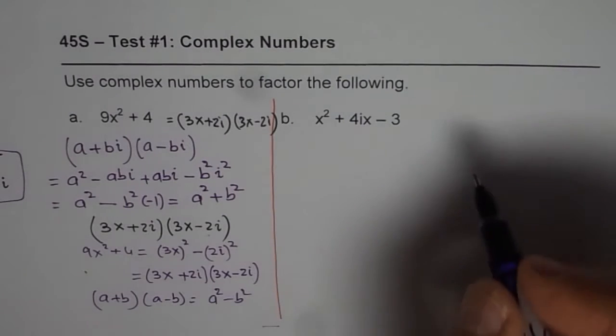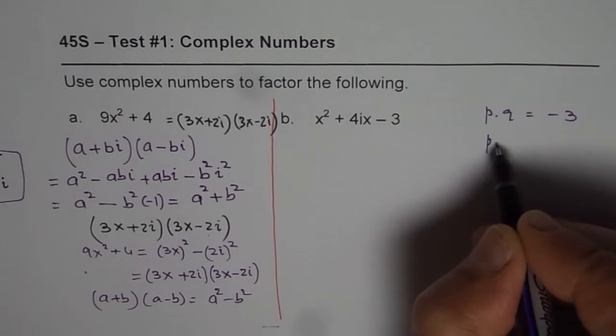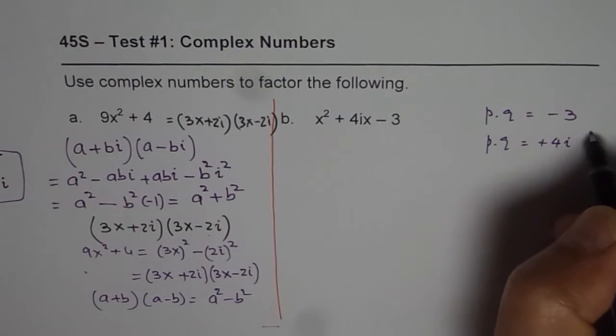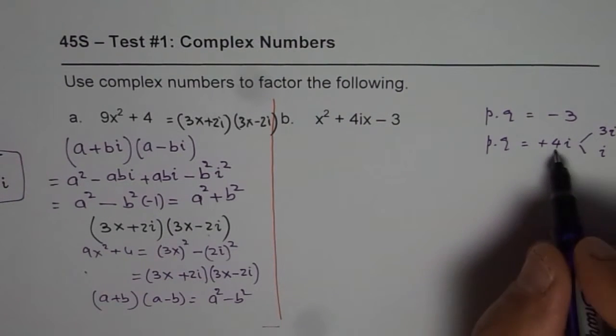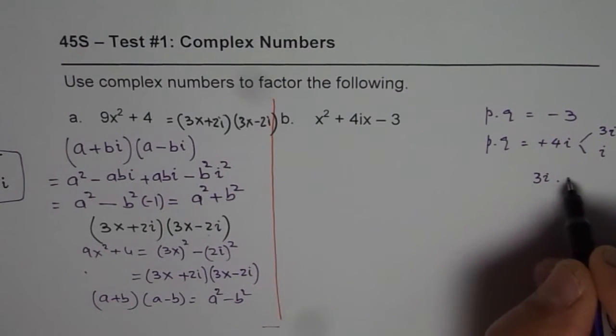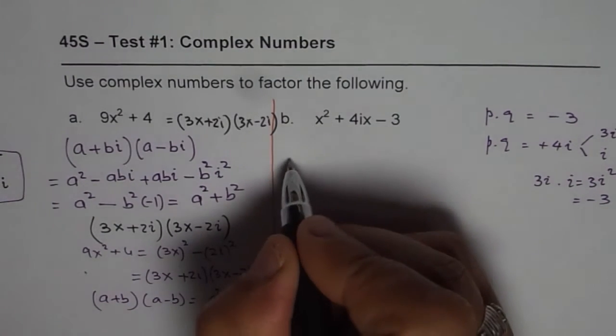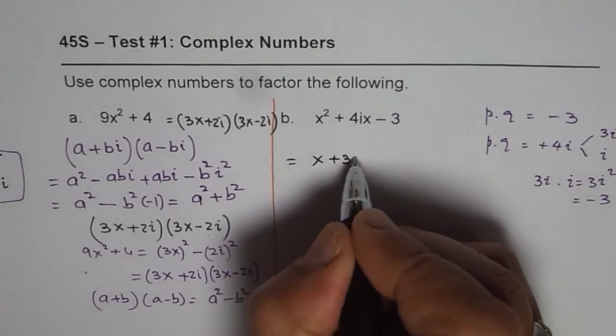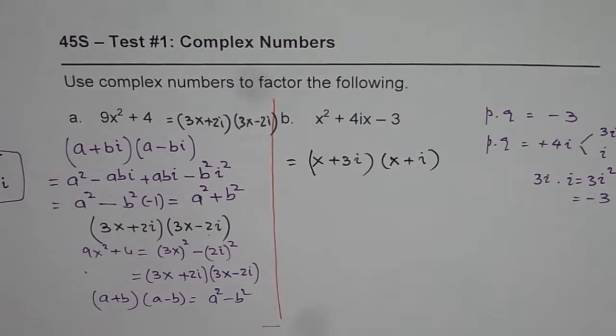Now let's look into the second example. We are looking for two numbers whose product is -3 and whose sum is +4i. So clearly the two numbers are 3i and i. So if I add them I get 4i. But if I multiply 3i with i I get 3i² which is -3. So it works. And therefore we can write this trinomial as x + 3i times x + i. And that is the factored form.